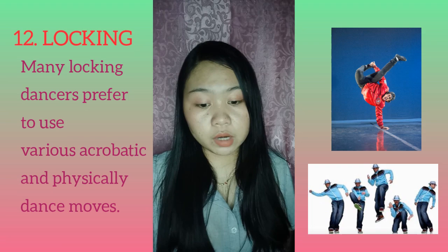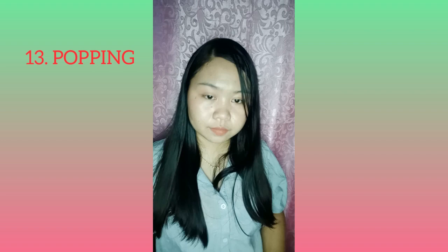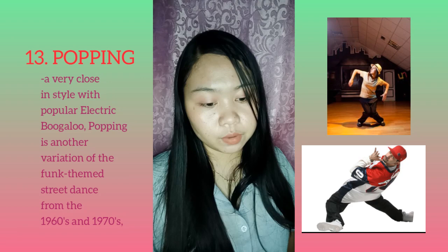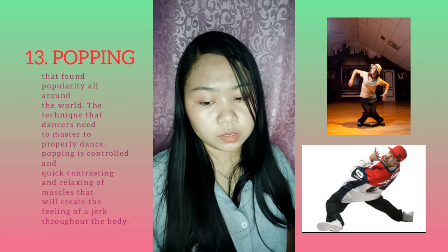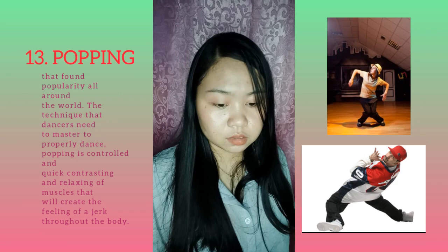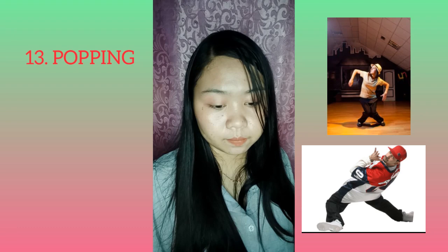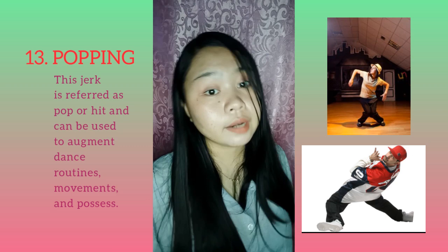Another type of modern dance is popping, a style very close to the popular electric boogaloo. Popping is another variation of the funk-themed street dance from the 1960s and 1970s that found popularity all around the world. The technique dancers need to master to properly dance popping is the controlled and quick contracting and relaxing of muscles that creates the feeling of a jerk throughout the body. This jerk is referred to as a pop or hit and can be used to augment dance routines, movements, and poses.